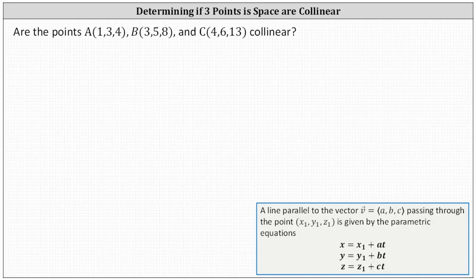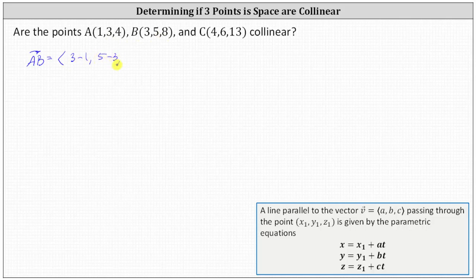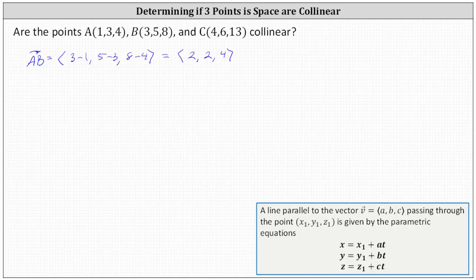To begin, we need to select two of the points to determine a direction vector. Let's set A as the initial point and B as the terminal point, and determine vector AB in component form. The x component is 3 minus 1, the y component is 5 minus 3, and the z component is 8 minus 4. Simplifying, the x component is 2, the y component is 2, and the z component is 4. This is the direction vector, or the vector parallel to the line, which gives us a = 2, b = 2, and c = 4.